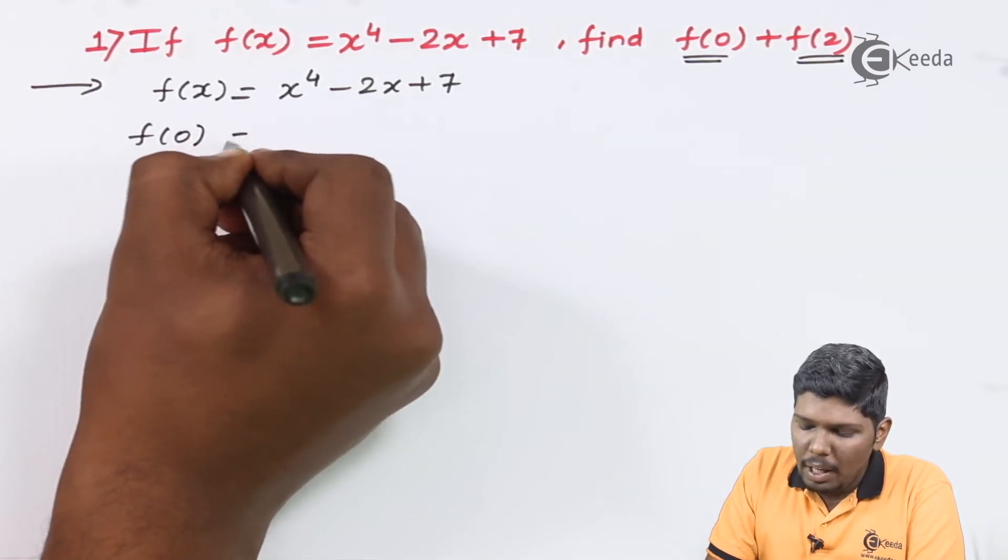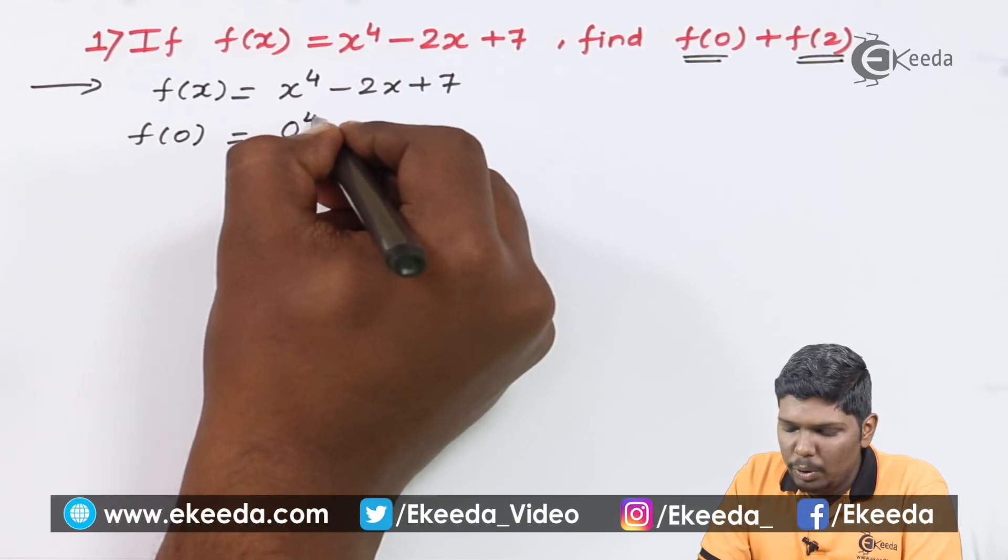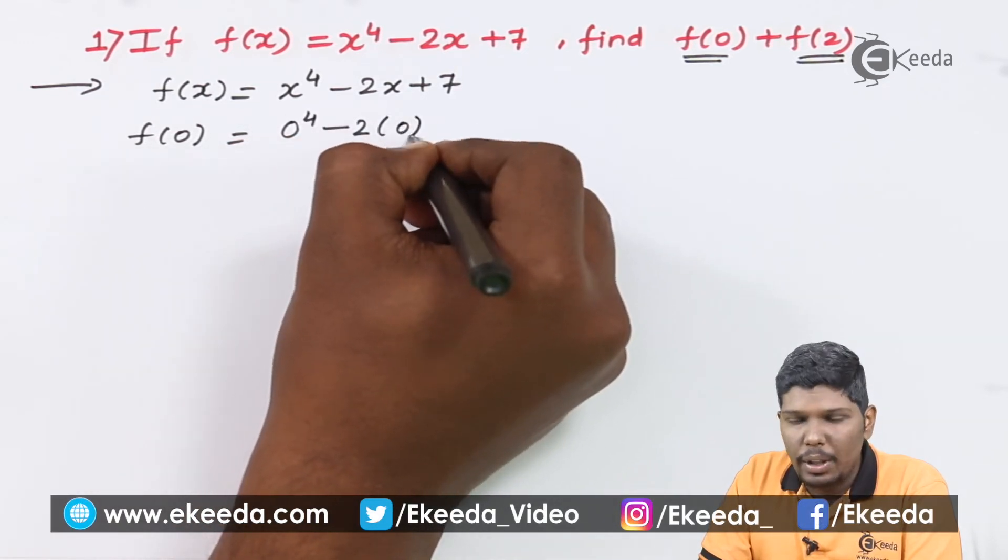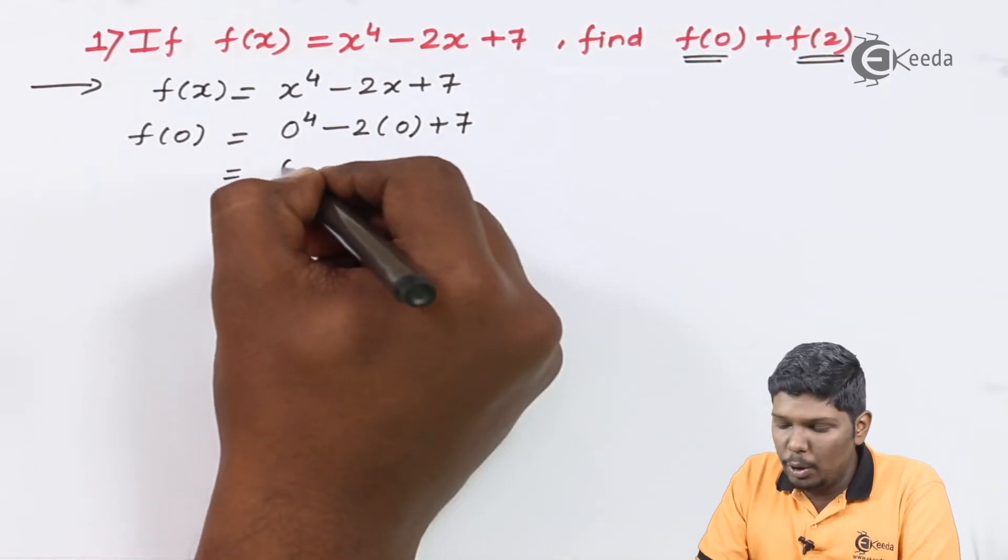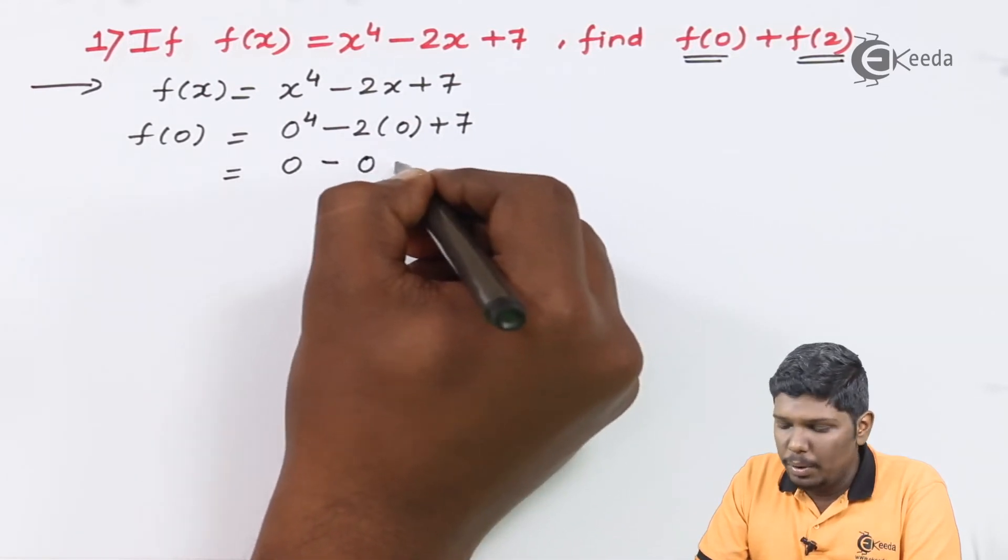To find f(0) we'll replace x by 0, so this becomes 0^4 - 2(0) + 7. So 0^4 becomes 0 minus 2 into 0 again it is 0 plus 7, so f(0) = 7.